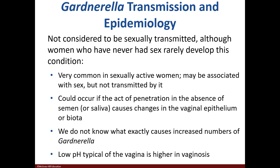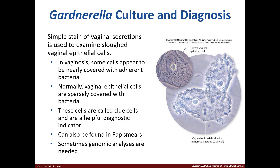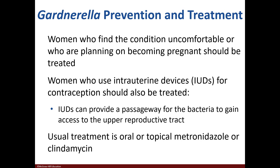Its mode of transmission is not sexually transmitted, but it may be associated with it. In vaginosis infections, the pH of the vagina is higher. A stain of vaginal secretions can be used in diagnosis — the epithelial cells are covered with bacteria and are considered clue cells. Treatment is with oral or topical metronidazole or clindamycin.